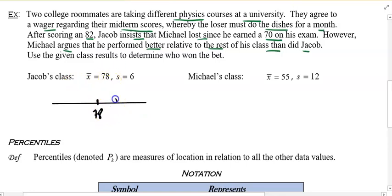Jacob's class, this is the long way. Average 78. Add a standard deviation that's 84. Add another standard deviation that's 90. And you notice Jacob's score was an 82. So Jacob in his class, 78, Jacob, the 82 in his class, earns him a C.